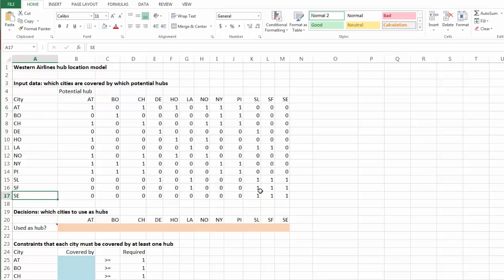Next, our decision variable, which cities to use as hubs. And they are in our cell B21 to M21. If a city will be used as a hub, then its value will be one, otherwise it will be zero. So those are our binary decision variables.